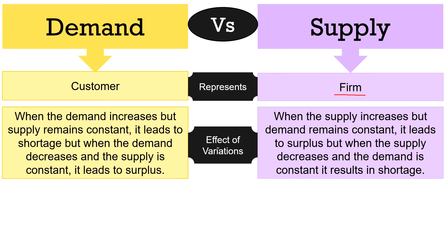Regarding the effect of variations: when demand increases but supply remains constant, it leads to shortage. When demand decreases and supply is constant, it leads to surplus. Whereas when supply increases but demand is constant, it leads to surplus, and when supply decreases and demand is constant, it results in shortage.